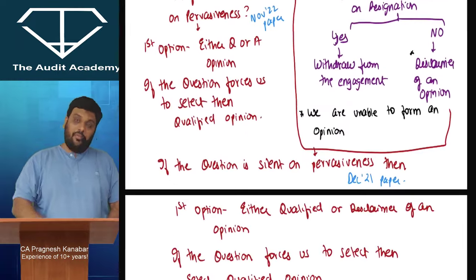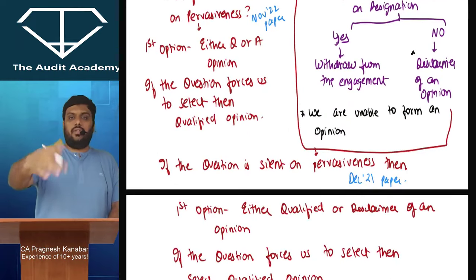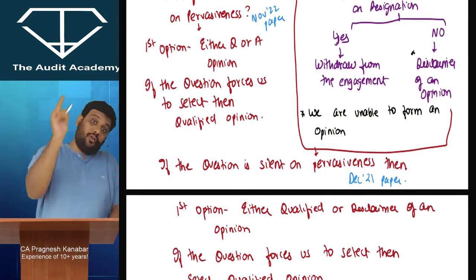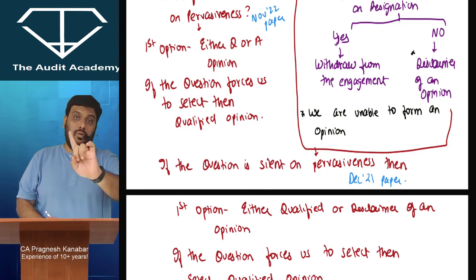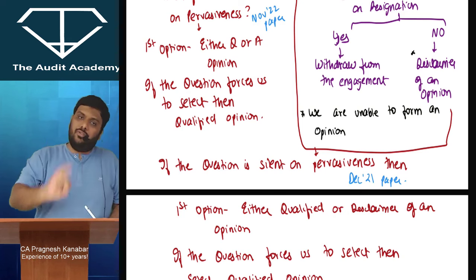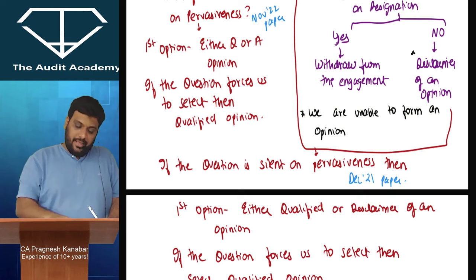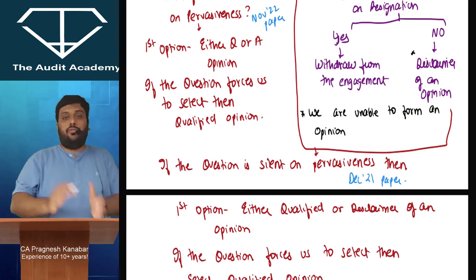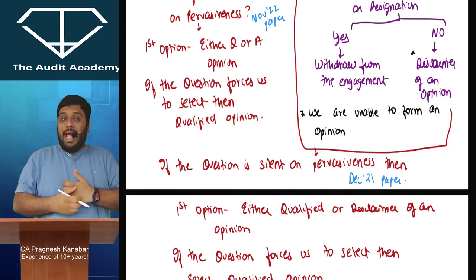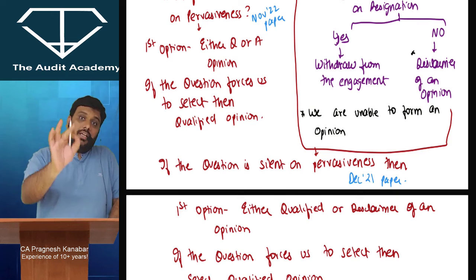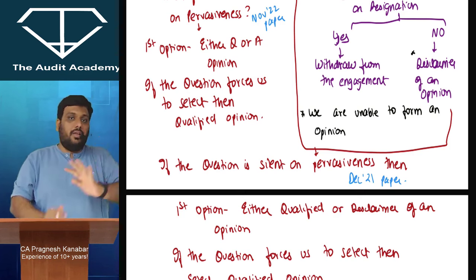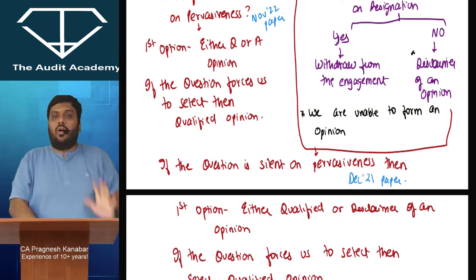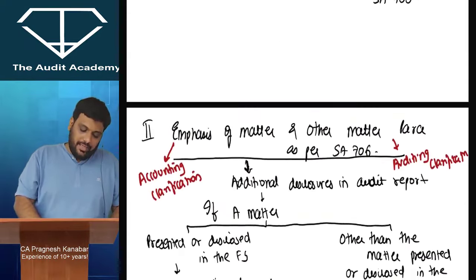If you are my Audit Academy student, refer to our question bank and you're done. If you're from the old course looking at these new revision lectures, cover the old course question bank plus the new course module question bank. Most importantly, in the module you should read the drafting of qualified opinion, adverse opinion, and disclaimer of opinion. Do this and you can never go wrong in the opinion part. That is it for SA 705.